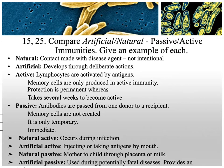To classify immunity as artificial, natural, passive, or active: artificial means it was forced on you; natural means you encountered it in nature. Passive and active refer to your ability to make antibodies — passive means you don't make them yourself; active means you did. If you're naturally exposed to the flu virus from someone nearby, you make antibodies against it — that's natural and active.